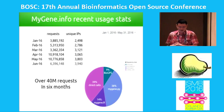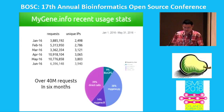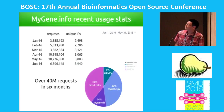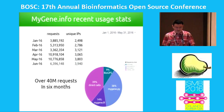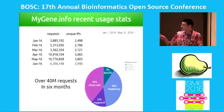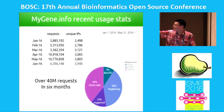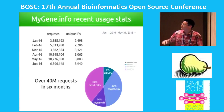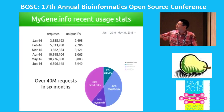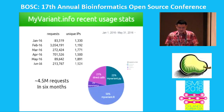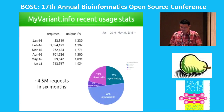Here's our recent usage stats from January to June this year, right before this conference. We had a pretty good period from April to June, with over 10 million requests in one month. Pretty much every month we have about 3,000 unique IPs, and we have totaled over 40 million requests in six months. About 40% of requests come from the MyGene Python client, 14% from the R client, and another 40% are direct calls. For MyVariant.info, we have five million requests in six months — pretty good so far.